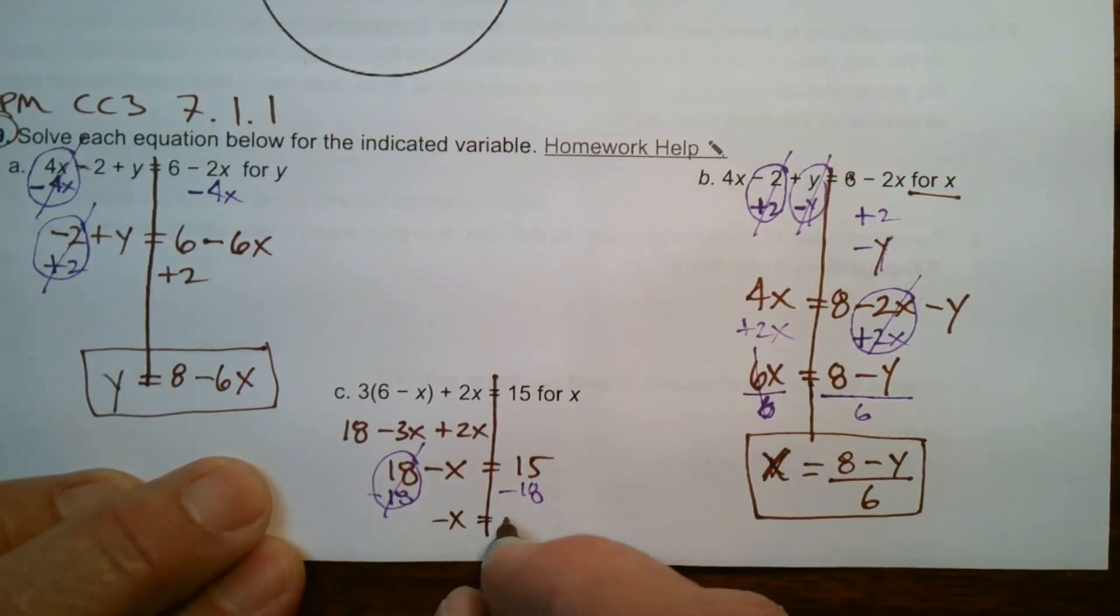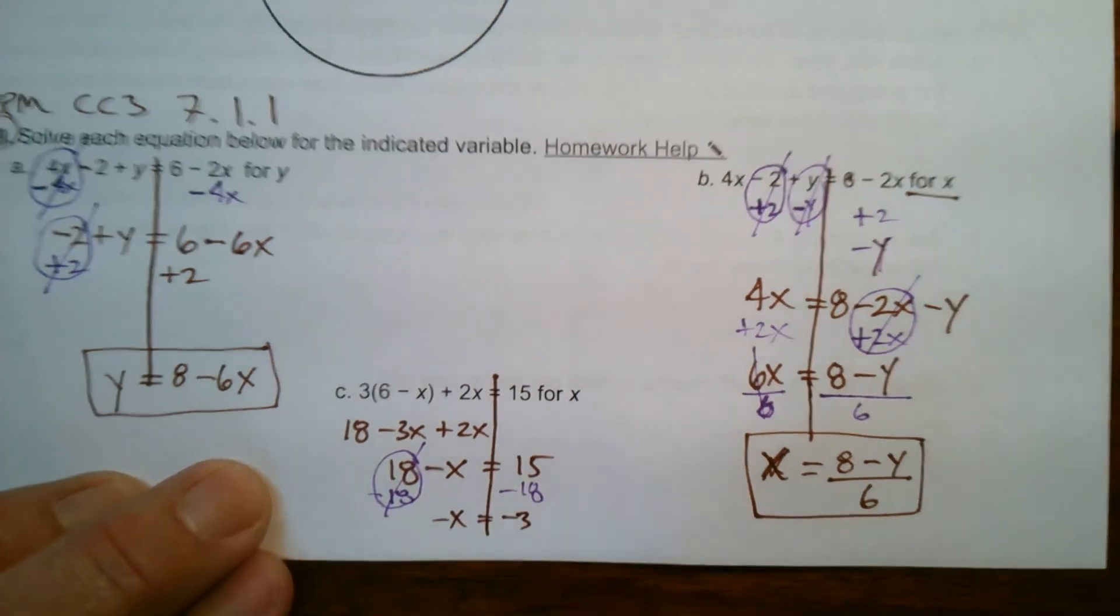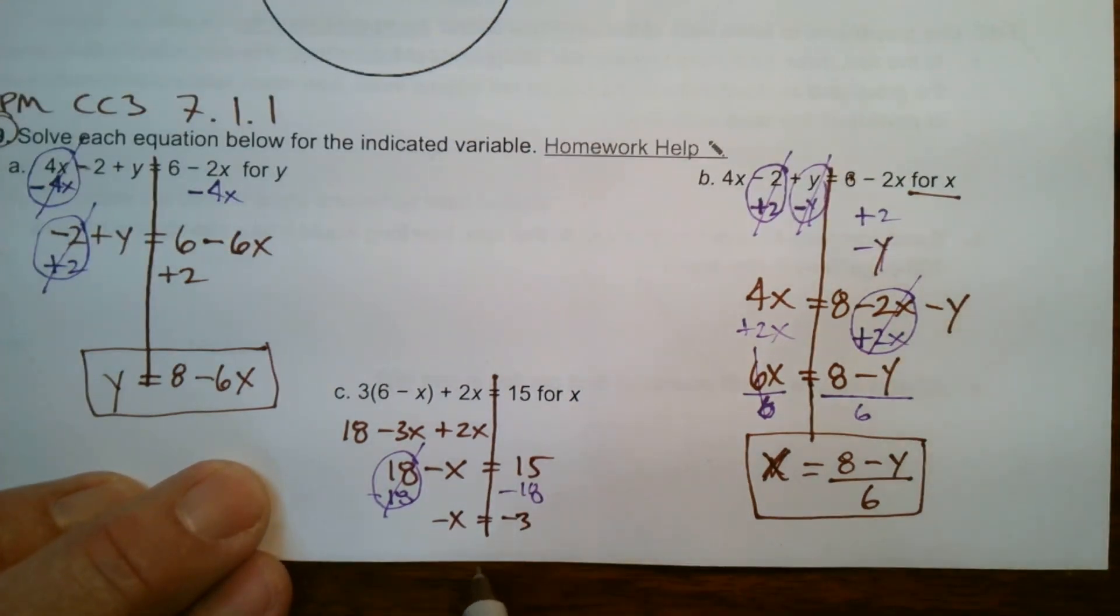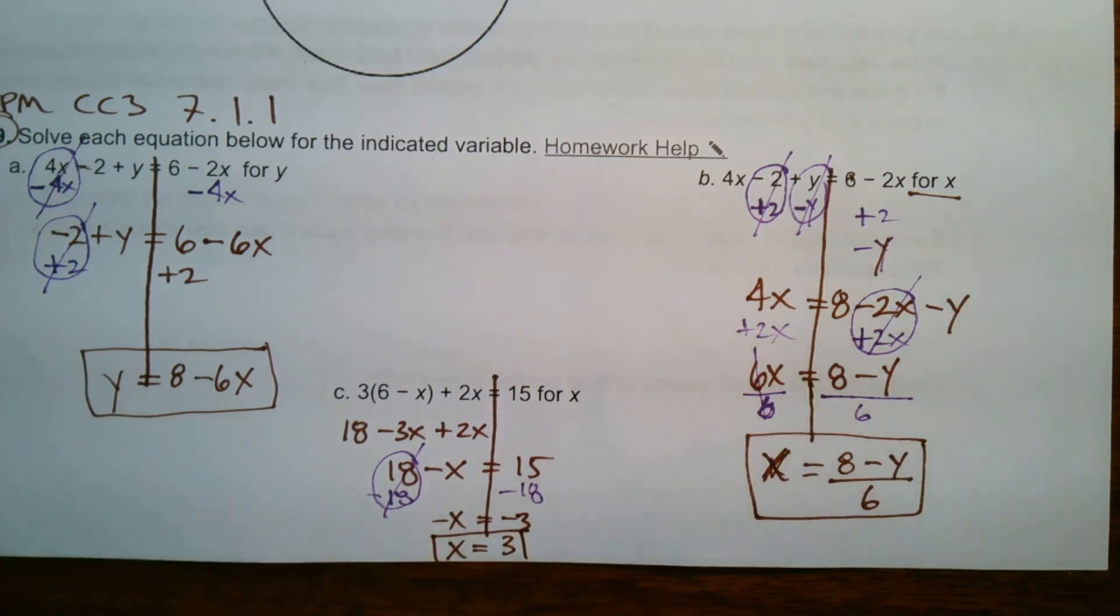So I have negative x is equal to negative 3. 15 minus 18. And if I have a negative x, I really want a positive x. So that just means divide by negative 1 or change the sign of both sides. So there you have it. x equals 3.